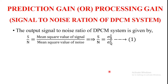Prediction gain or processing gain is also called as signal to noise ratio of the DPCM system. The output signal to noise ratio of the differential pulse code modulation system is defined as: SNR equals the mean square value of the signal divided by the mean square value of the noise, which is equal to sigma x square by sigma q square, where sigma x square is the variance of the input signal X(nTs) and sigma q square is the quantization variance of the quantization error Q(nTs).